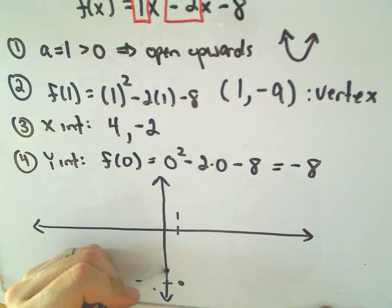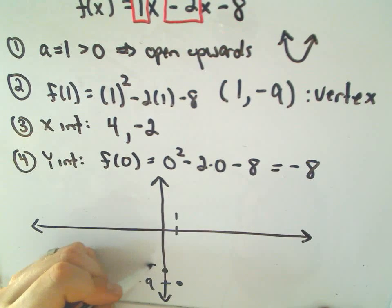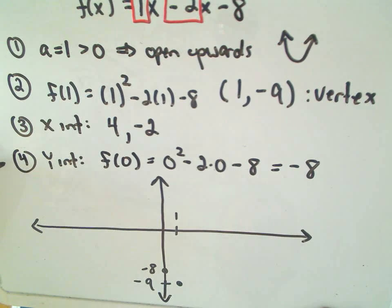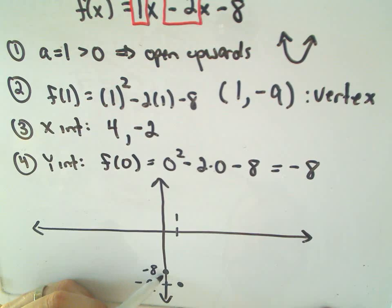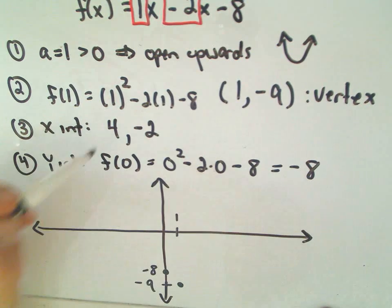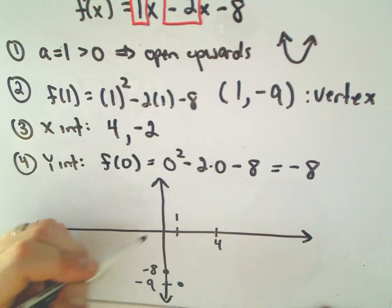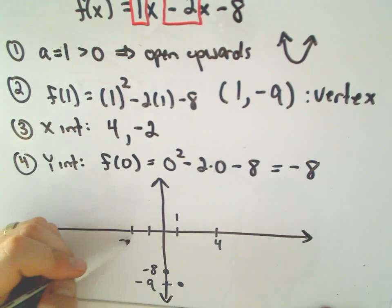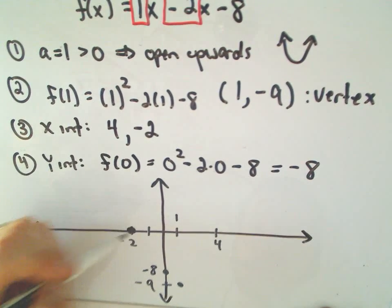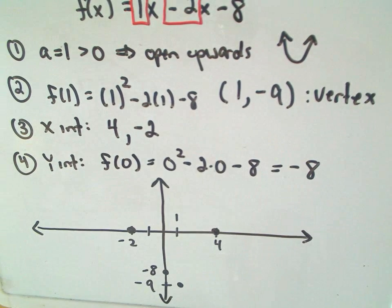I know the y-intercept is negative 8. So that's what we actually found in the fourth step. So I know it goes through (0, -8). I know the x-intercepts. I know it crosses the x-axis at 4. And also, it crosses at negative 2, based on what we saw. So I'm going to put some points there as well.